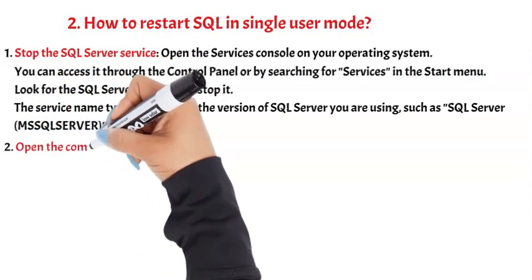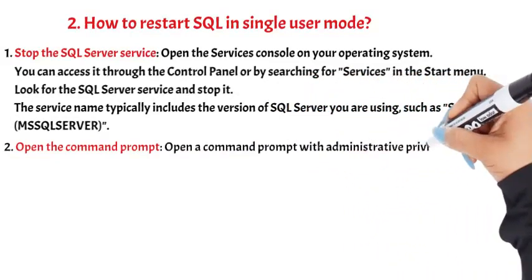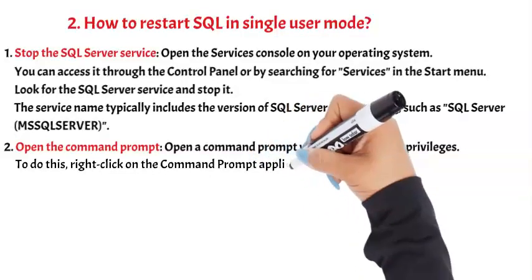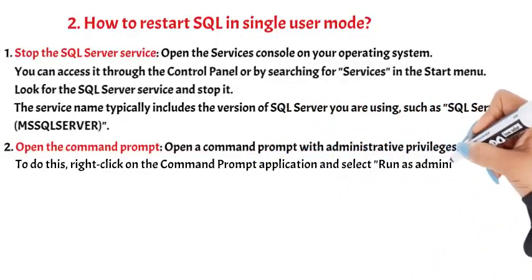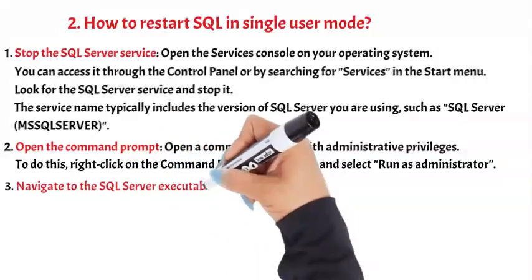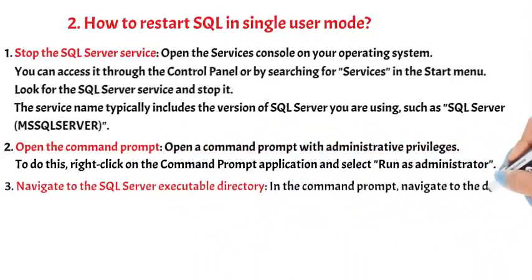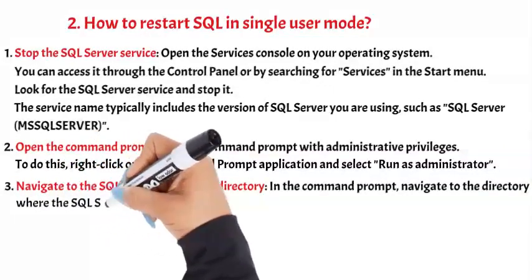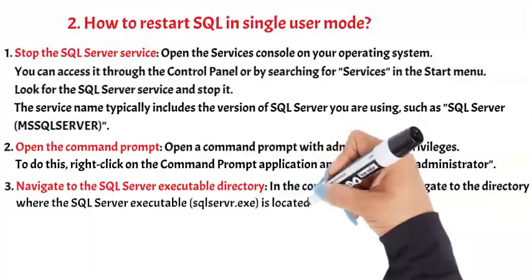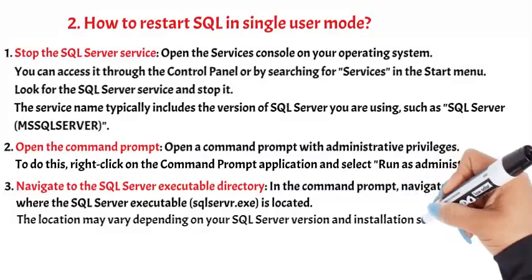Step 2: Open the Command Prompt. Open a Command Prompt with administrative privileges. To do this, right-click on the Command Prompt application and select Run as Administrator. Step 3: Navigate to the SQL Server Executable Directory. In the Command Prompt, navigate to the directory where the SQL Server executable (sqlservr.exe) is located. The location may vary depending on your SQL Server version and installation settings.